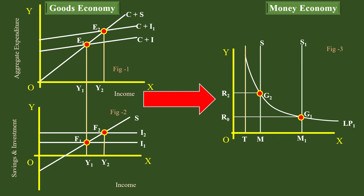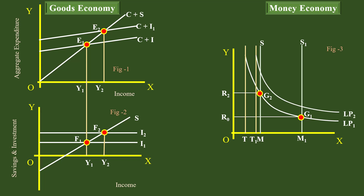This increase in income has its own reflection in the money economy. An increase in income increases the transaction demand for money. It shifts the transaction demand for money T to T1, which in turn shifts the demand curve of money LP1 to the right. The new demand curve of money LP2 cuts the supply curve of money M1S1 at G3. The final interest rate is R1, which is higher than R0. This is how the goods economy plays its role in determining the equilibrium interest rate.